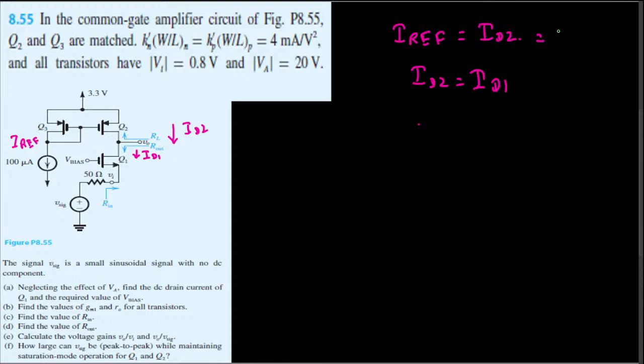Therefore, I_D2 equals I_D1, which is 100 microamperes. Therefore, we can say I_D1 is equal to 100 microamperes. This is straightforward—once it's matched, you automatically know it's a current mirror. Whatever the reference current is will be the exact current you're going to have in most cases.